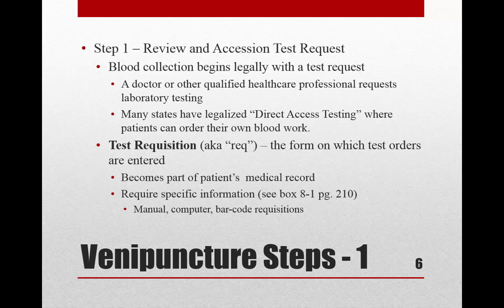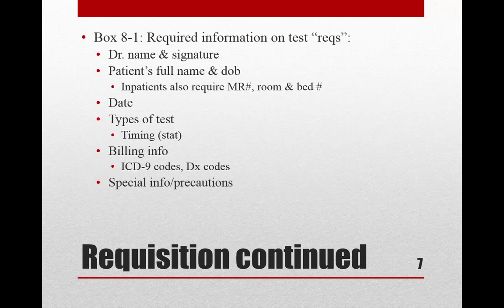The requisition must have the patient's name, date of birth, and for inpatients, their medical record number. It also needs the tests listed along with associated codes. Many states have direct access testing where patients can order their own blood work, and that must have the same content. If you look at Box 8.1, required information on test requisitions — abbreviated as REQ — all of that information must be on your requisition.